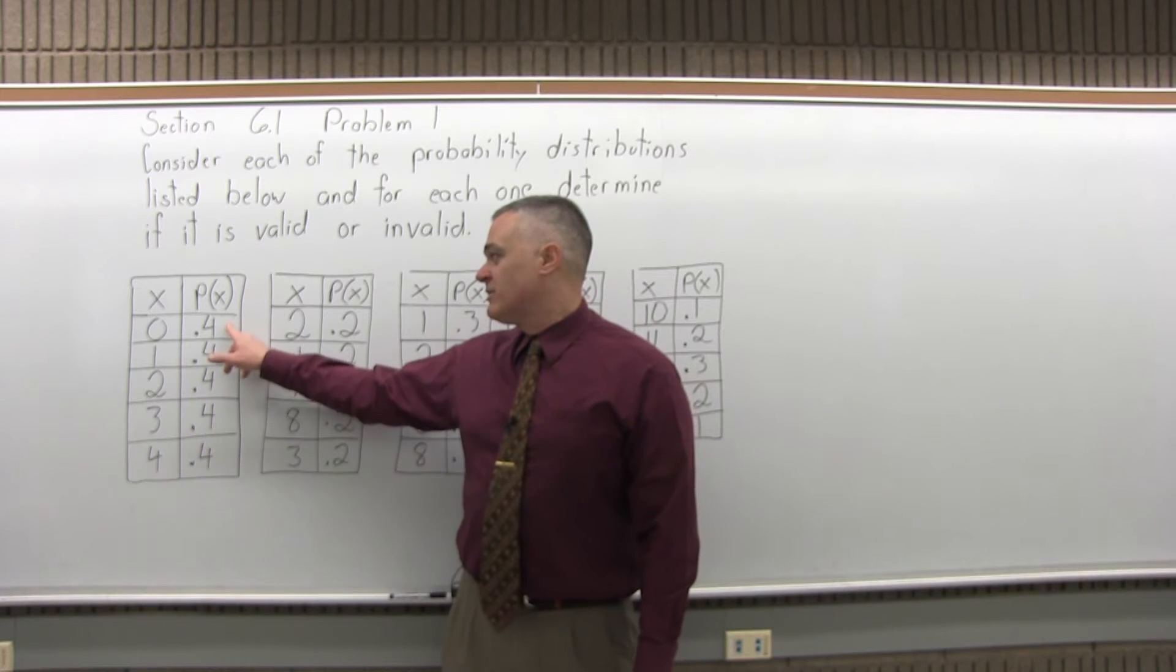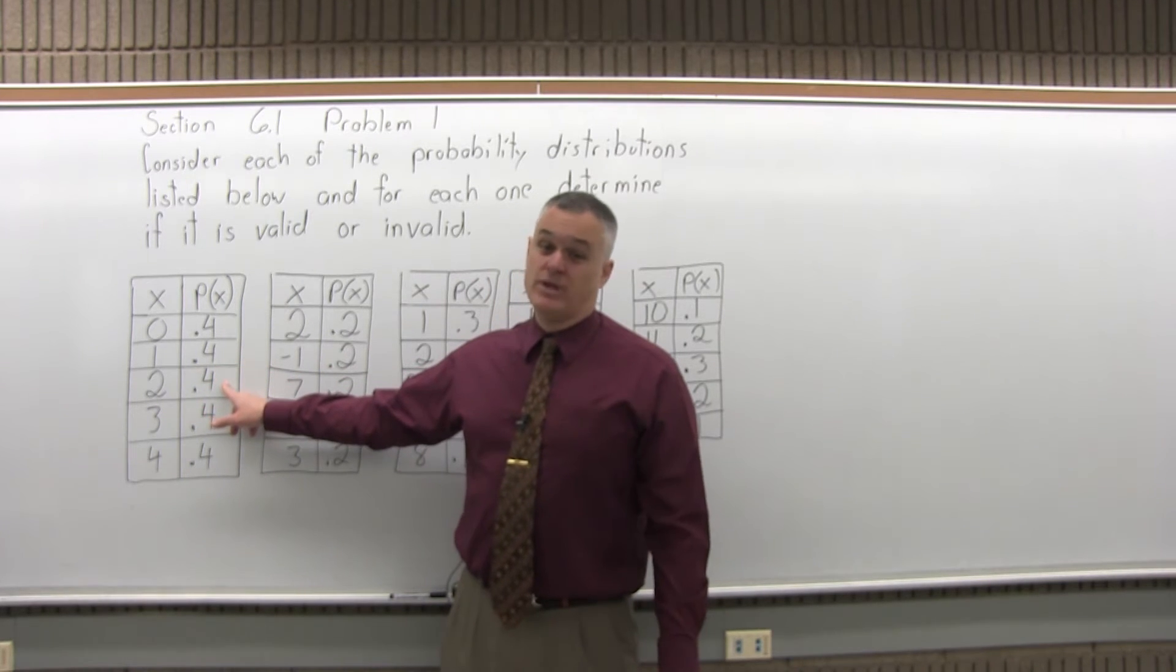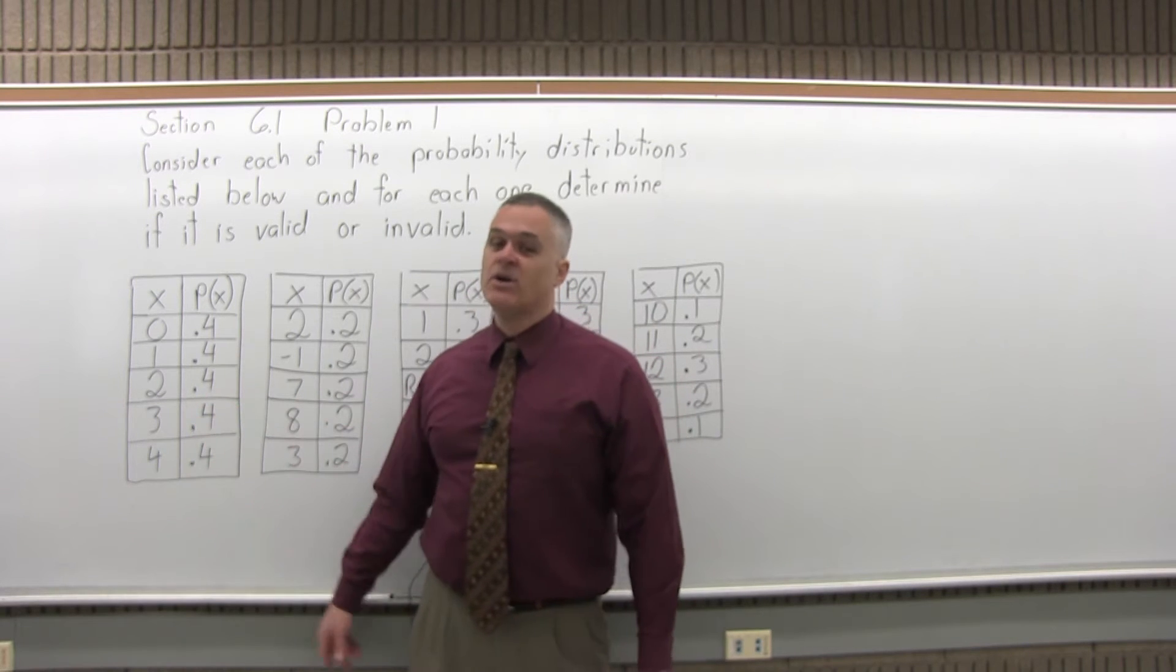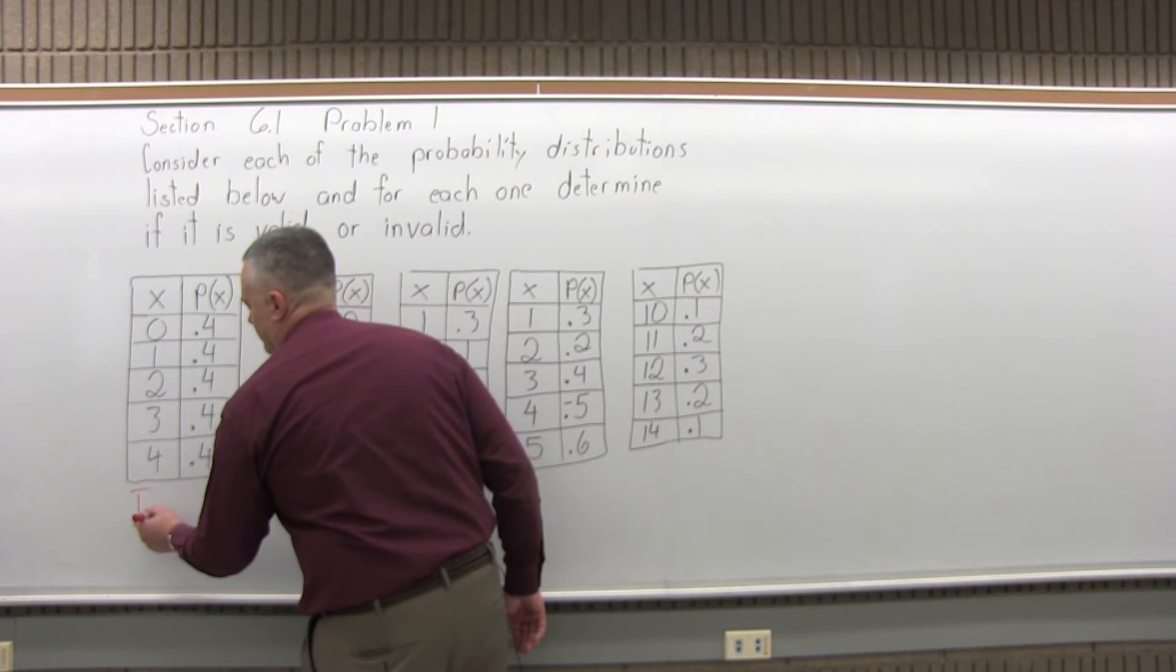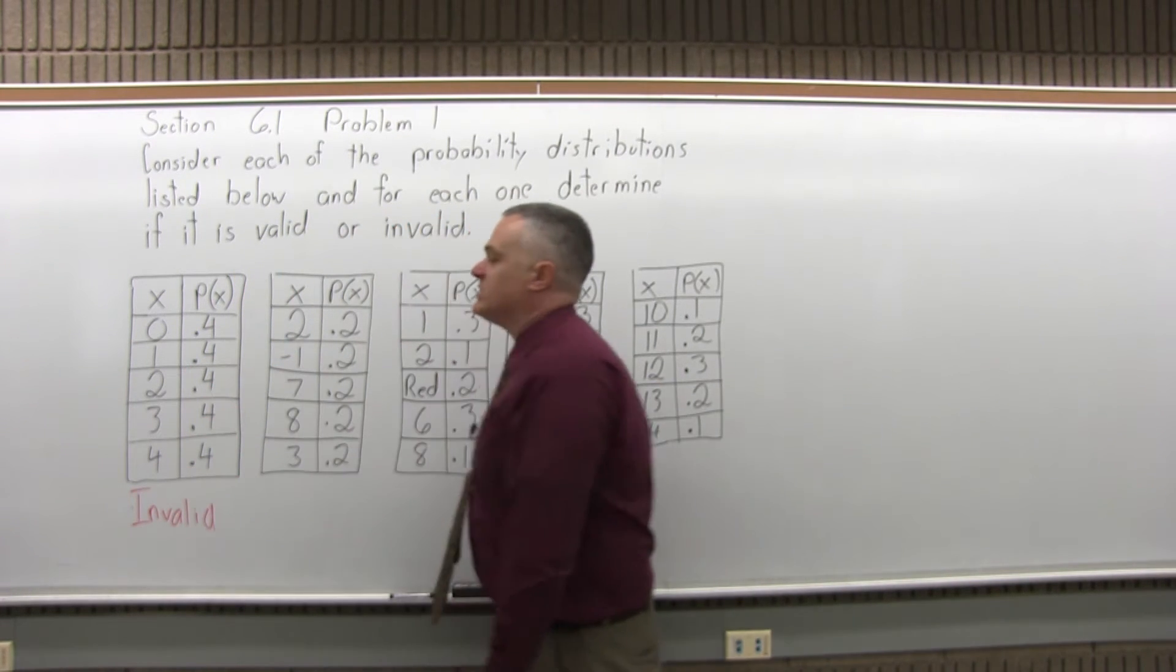If you add this up, 0.4 and 0.4 is 0.8. 0.8 and another 0.4, you're up to 1.2. You're already over 1, and then another one is 1.6 and then 2.0, a lot more than 1. So the first one is invalid, and the reason being that the total of that second column is not 1.